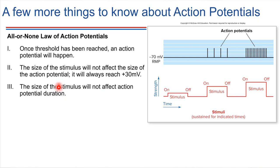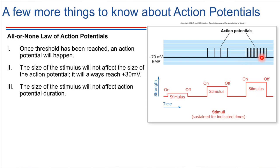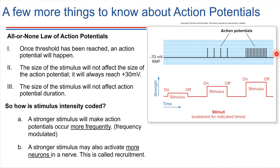This raises the question: how do we detect different levels of stimulus? You could push on something very lightly or very hard and feel a difference. What encodes that information? It turns out it's the frequency of the action potentials. A very low stimulus produces action potentials less frequently. A harder stimulus — where it might even start to hurt — causes action potentials to occur more frequently. They always have the same magnitude, always reaching plus 30, but they occur more frequently. Stimulus intensity is encoded by how frequently action potentials occur.